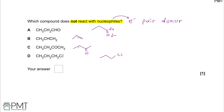Compound C, butanone, also has a delta positive carbon for the same reasons as in propanal. And in D we also have a delta positive carbon because the chlorine is more electronegative than the carbon, so it pulls those electrons away from it, meaning this carbon is slightly electron deficient.